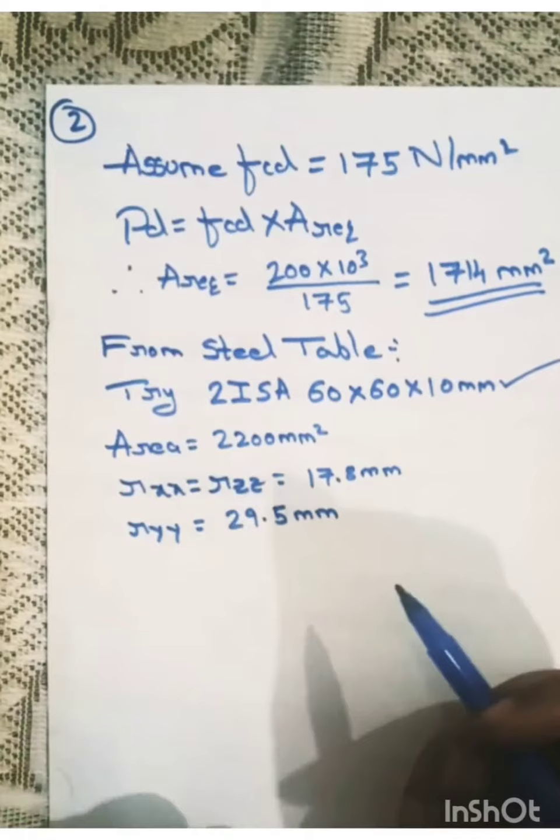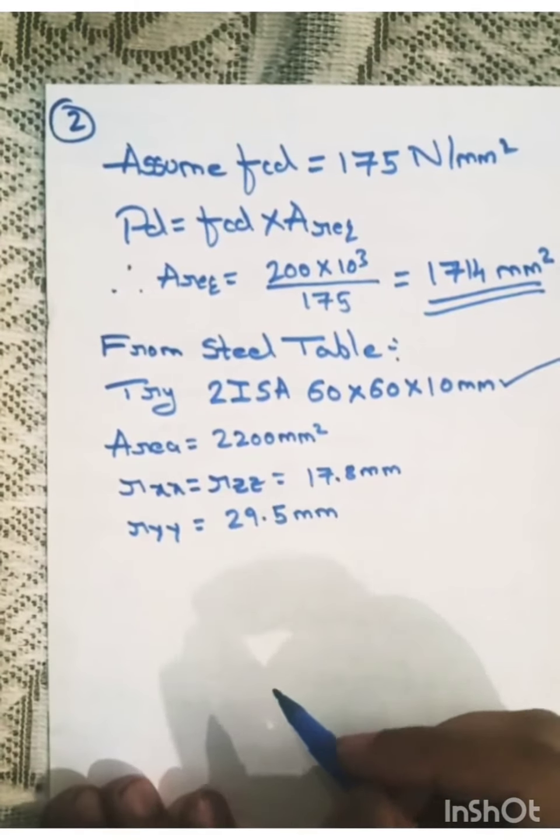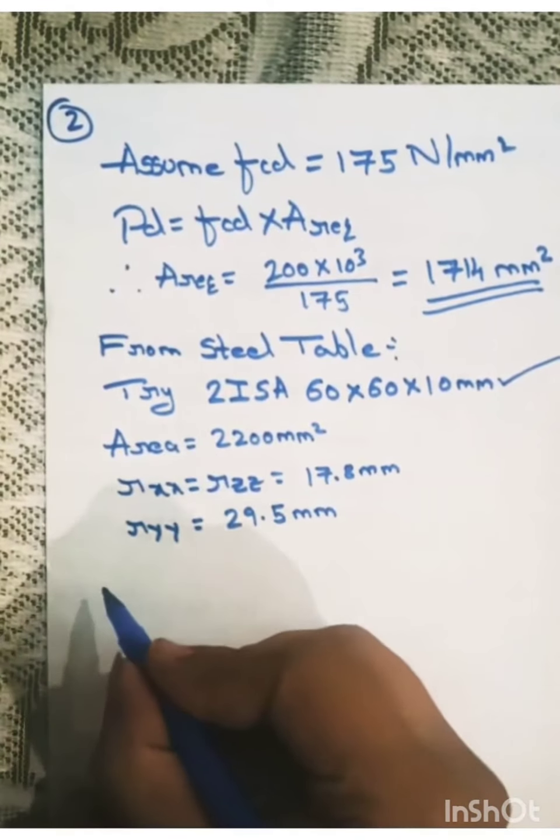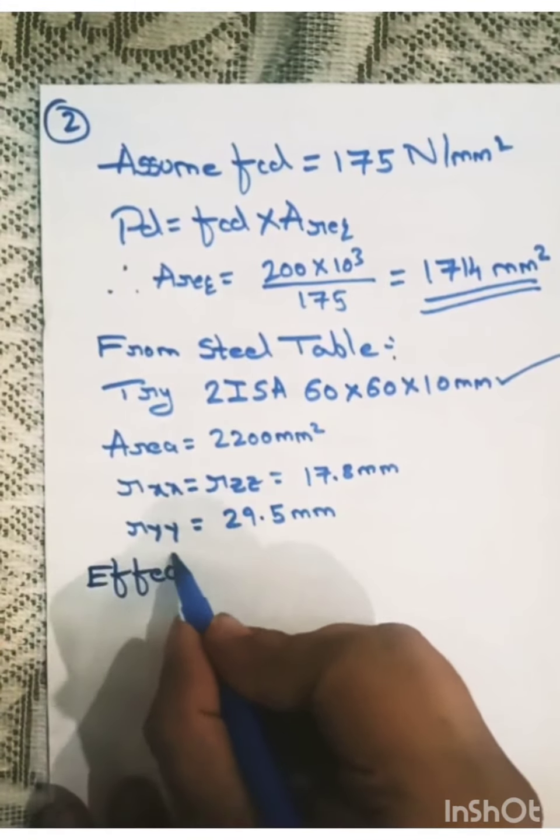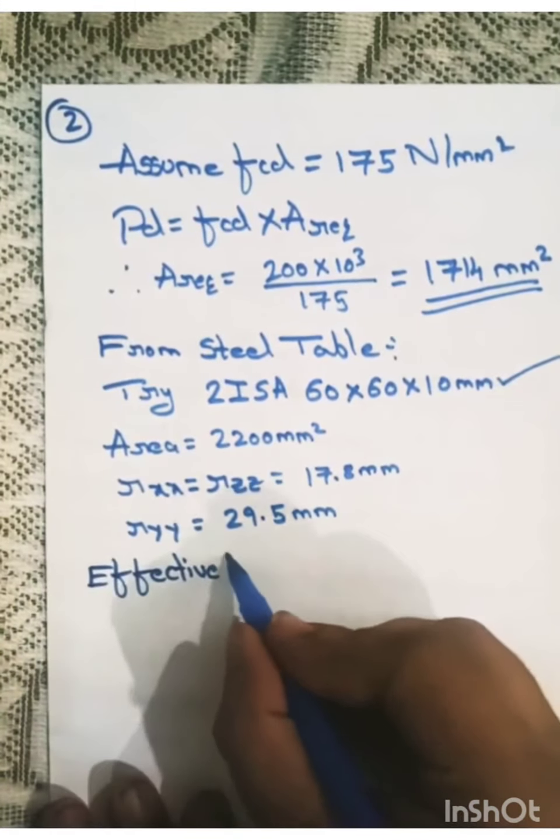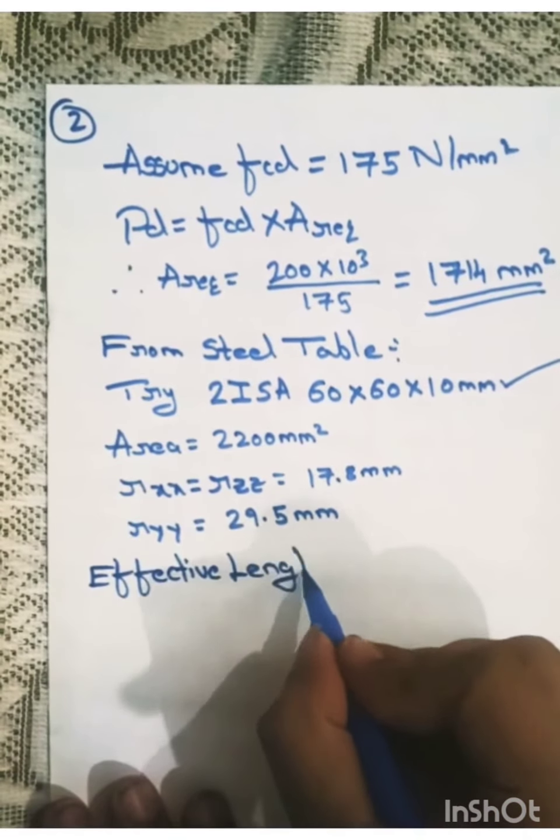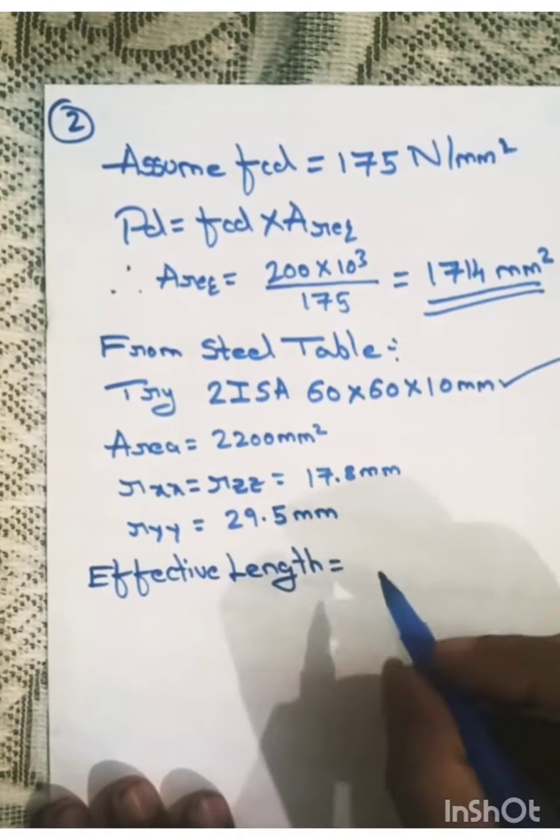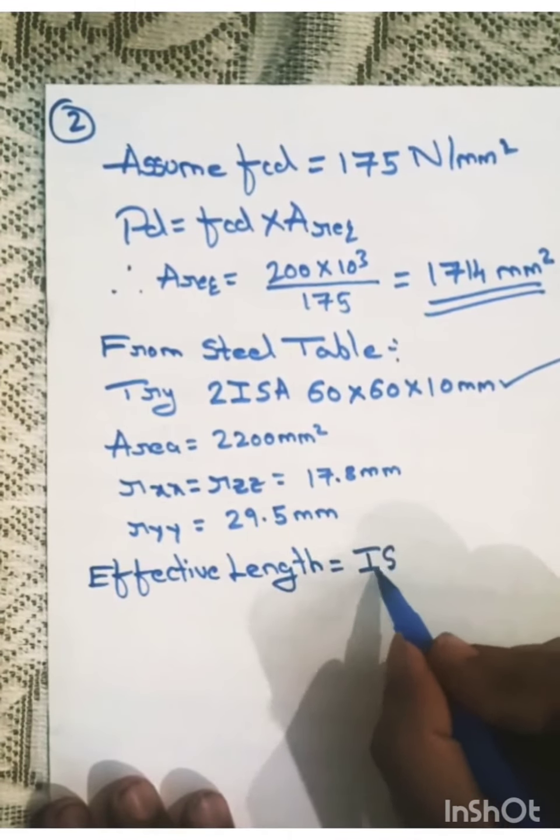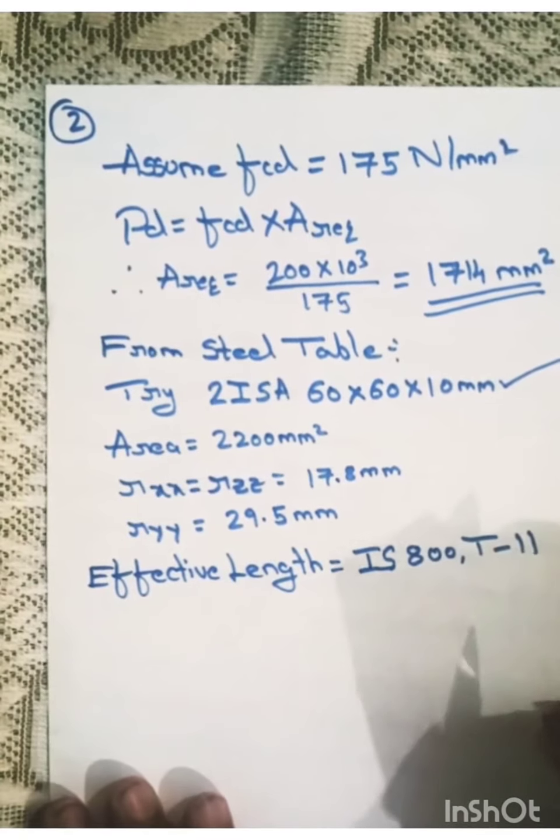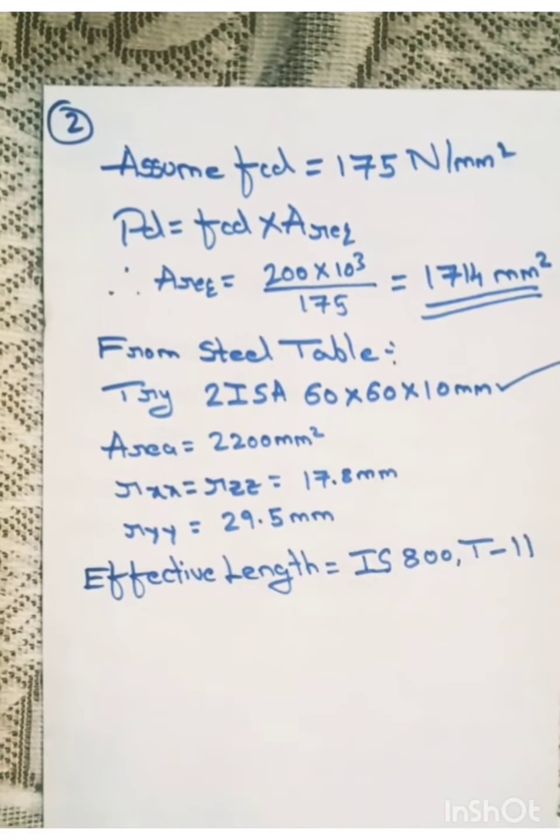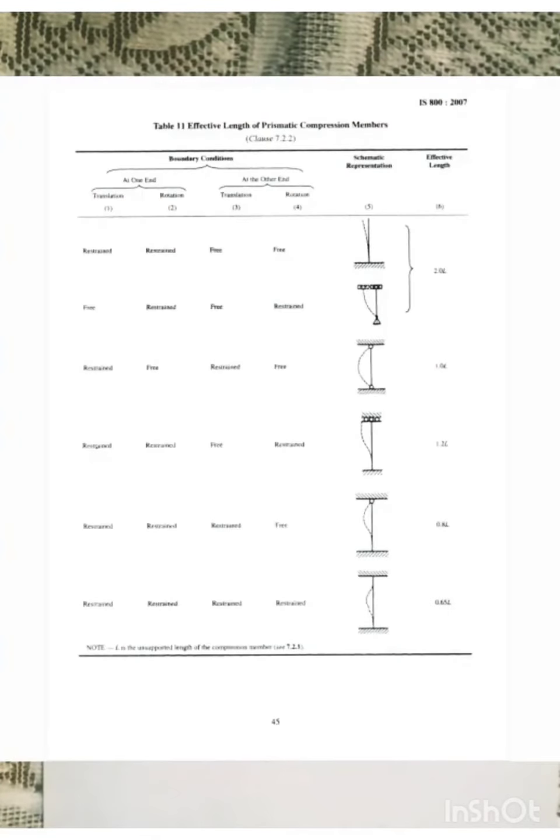So next is, we need to find the effective length. So effective length, we can find it using IS800 table number 11. You can see in table number 11, there are different conditions given.